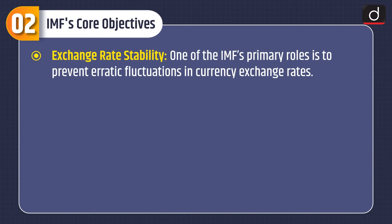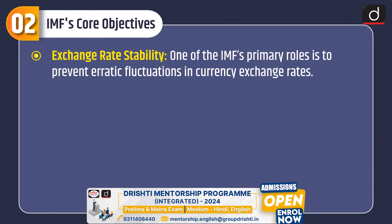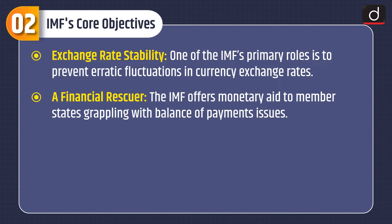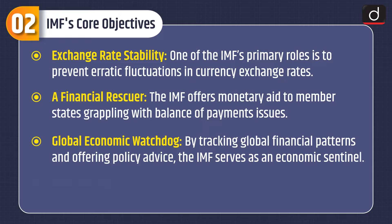Moving on to IMF's core objectives. Exchange rate stability: one of the IMF's primary roles is to prevent erratic fluctuations in currency exchange rates. As a financial rescuer, the IMF offers monetary aid to member states grappling with balance of payments issues. As a global economic watchdog, by tracking global financial patterns and offering policy advice, the IMF serves as an economic sentinel.